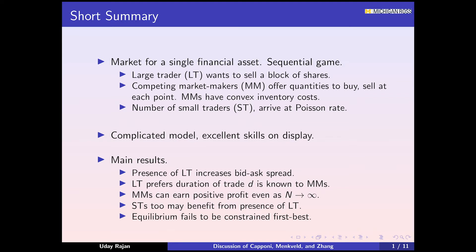The large trader chooses a rate at which they're going to sell. They have a fixed time period they're going to be in the market for and they're going to sell at a constant rate in this time period. Whom are they selling to? They're selling to market makers who are competing in Cournot fashion. The market makers are deciding what quantity they'll be buying at each time period. These market makers have costs to holding inventory and these costs are convex in the amount that we ask them to hold. These are the two main strategic players in the market.